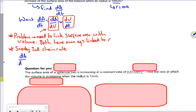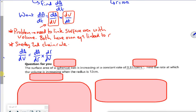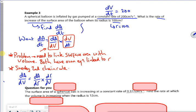So dA/dV is dA/dr times dr/dV. I need something with area and radius and something with volume and radius. So I know that A was 4π r squared, so dA/dr is 8π r.